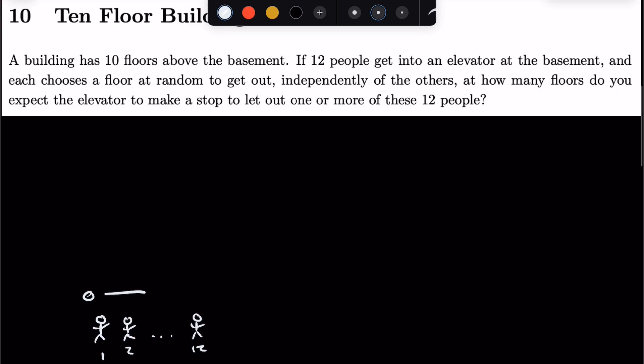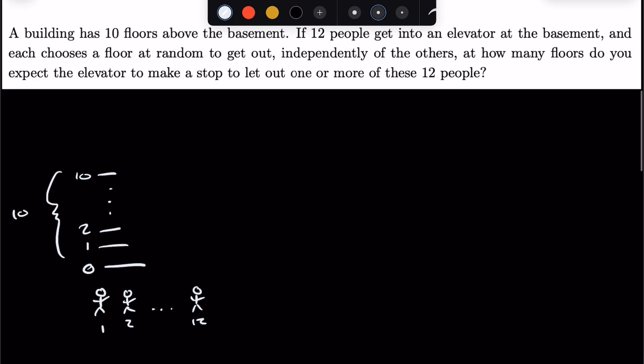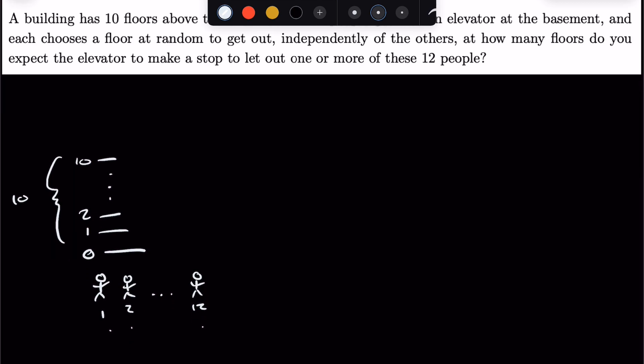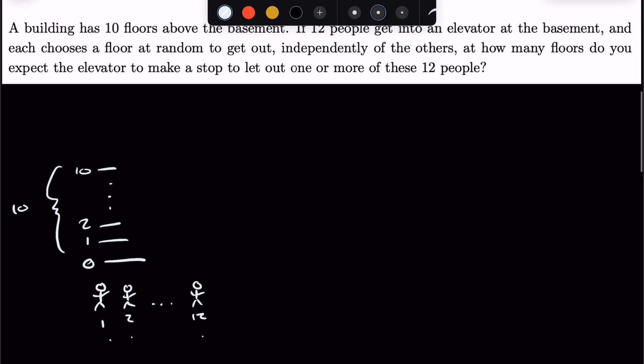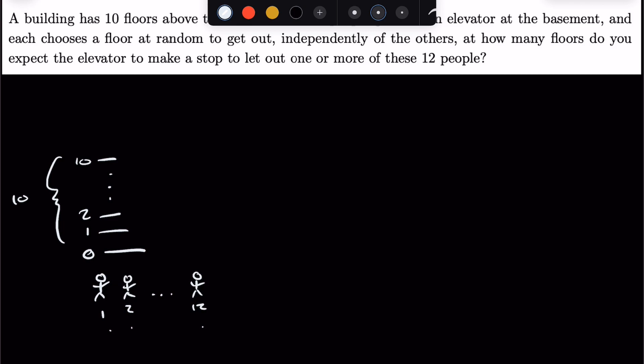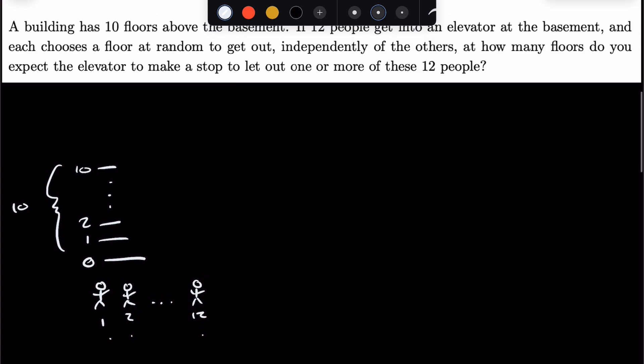And above that, we have 10 floors. So floor 1, 2, and so on to 10. So there are 10 distinct floors, and each of the 12 people are going to choose one of these 10 floors to get out, independently of the others. And the question then asks, at how many different floors will the elevator stop at, or what's the expected number of floors that the elevator will stop at?